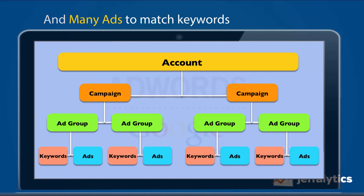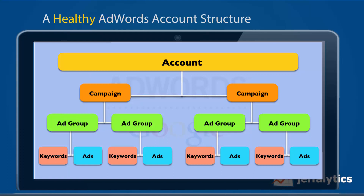An ad group is a tightly knit ecosystem that has keywords and ads. It automatically matches your keywords to your ads so that when somebody types a query into a search engine, your ad shows up in the Google search result. The more closely your keyword matches your ad, the better the experience for the user. You want these things to match as closely as possible — a one-to-one ratio. This is what I call a healthy account structure.